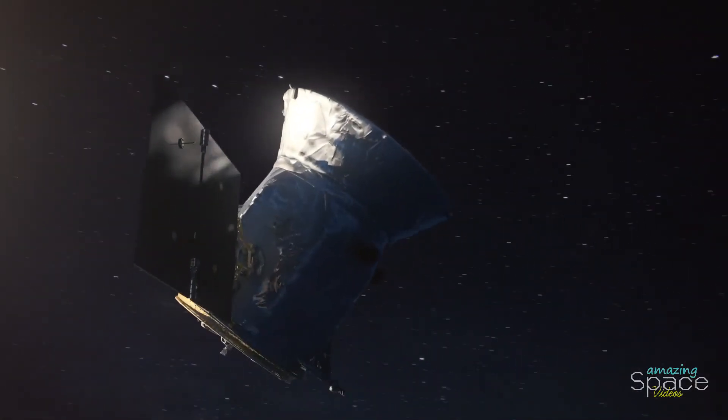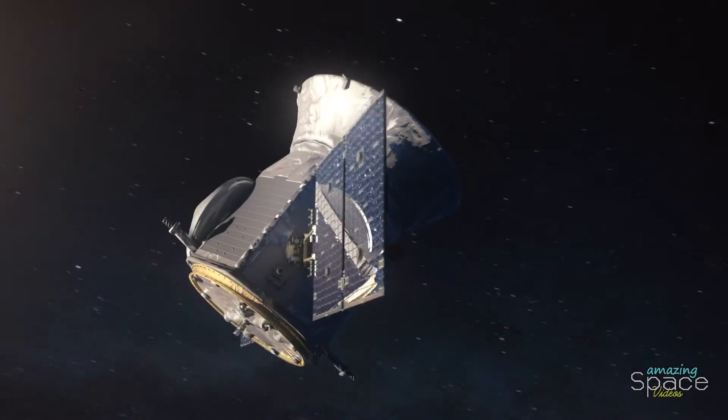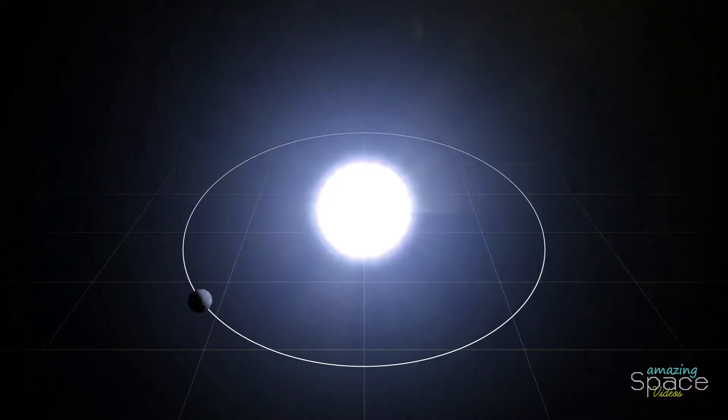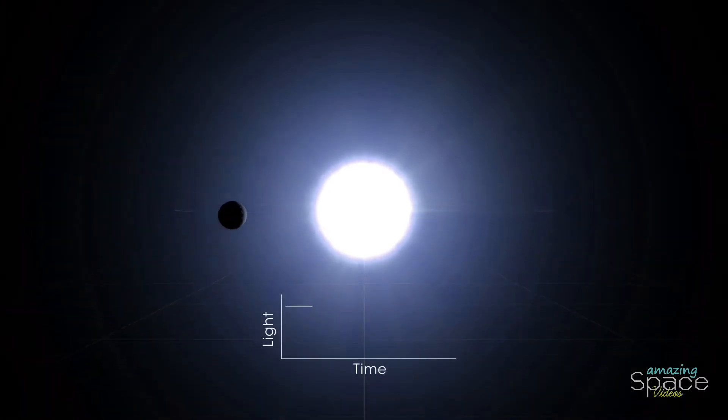Now, thanks to observations from NASA's TESS satellite, we know KELT-9b is even weirder. TESS spots dips in starlight whenever a planet passes in front of its star from our perspective. Astronomers call these dips transits.